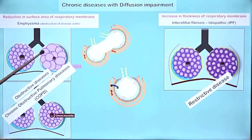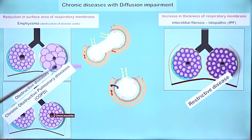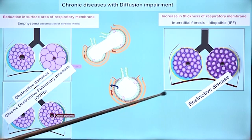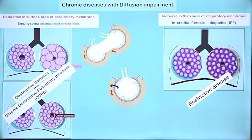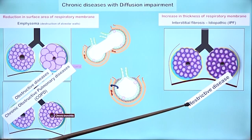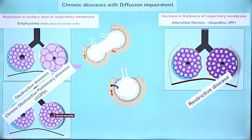In obstructive pulmonary diseases, the problem is in the airways — there is obstruction to airflow and therefore ventilation may be affected. In restrictive diseases there is restriction to expansion of the lung because compliance is low, and eventually ventilation impairment can occur in this condition as well.